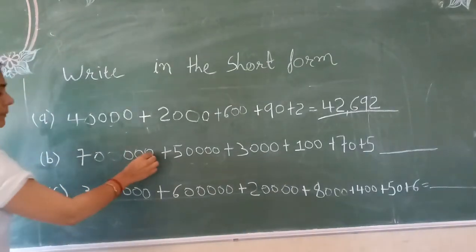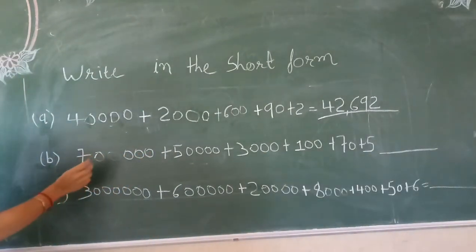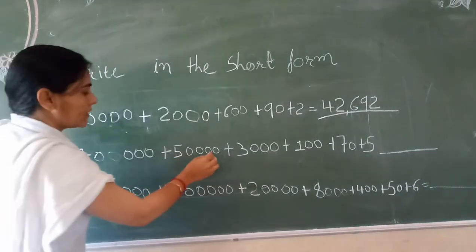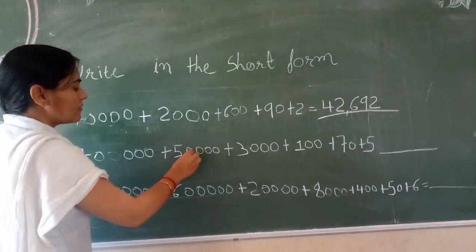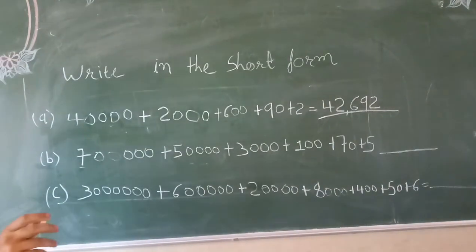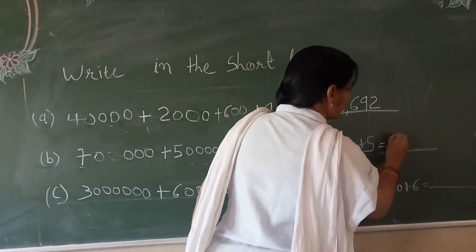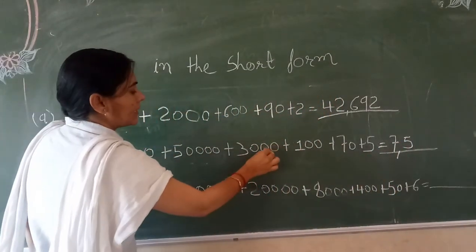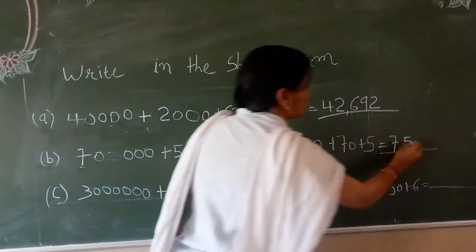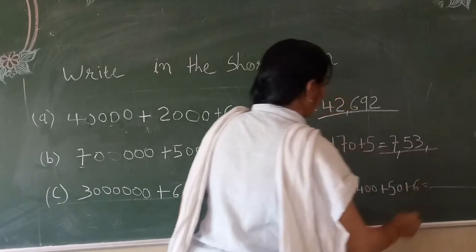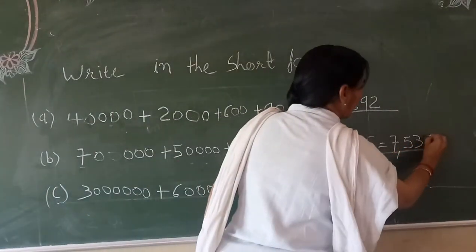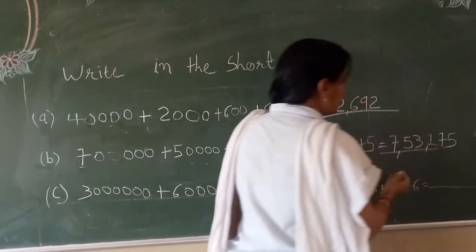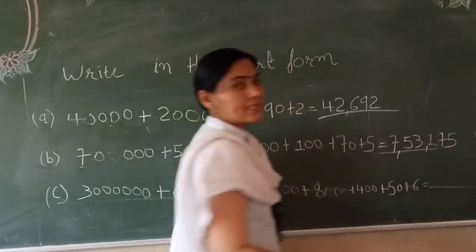Next one: one place, ten, hundred, thousand, ten thousand, and lakh. In the lakh place there is 7. Plus ten thousand place there is 5. Plus thousand place there is 3,000. Plus hundred place there is 1. Plus ten place there is 7. Plus one place there is 5. So 7 lakh, 53,000, one hundred and seventy-five — that is 7,53,175.